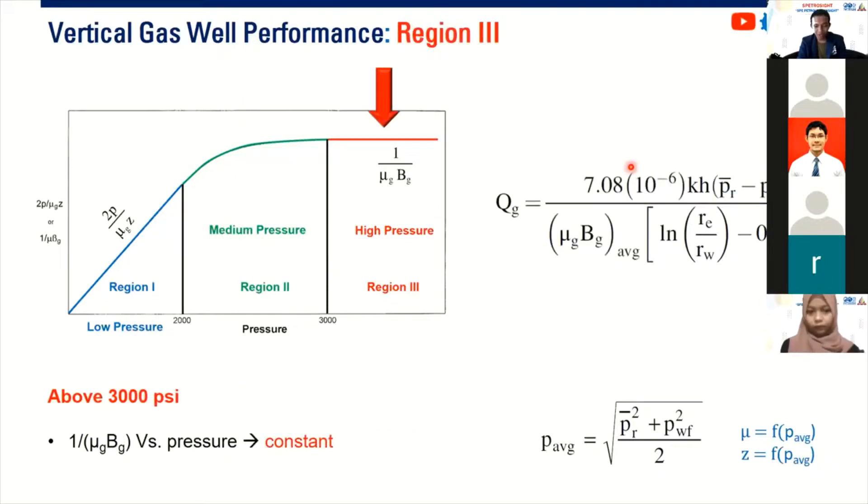And lastly, above 3000 PSI, we know or we can see that one divided by rho times B plotted against pressure, it's constant. It's actually easier. The pseudo pressure can be approximated by just pressure. No need to pressure squared, no need to do pseudo pressure. You can actually use your pressure data. So if you are producing a well operating at or above 3000 PSI, you can use this form.